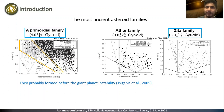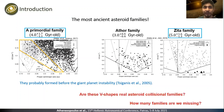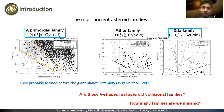However, some new questions are raised. Are these V-shape families real families? If the answer is yes, how many families are we missing? Although the identification method is novel, the reliability of these V-shape families should be independently verified.